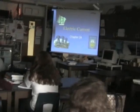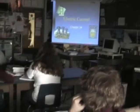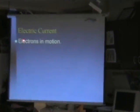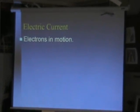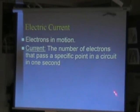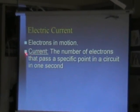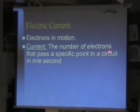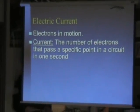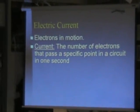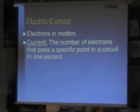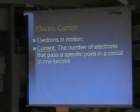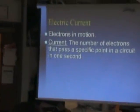Electric Current, Chapter 34. Electric current is electrons in motion. Current is the number of electrons that pass a specific point in a circuit in one second.